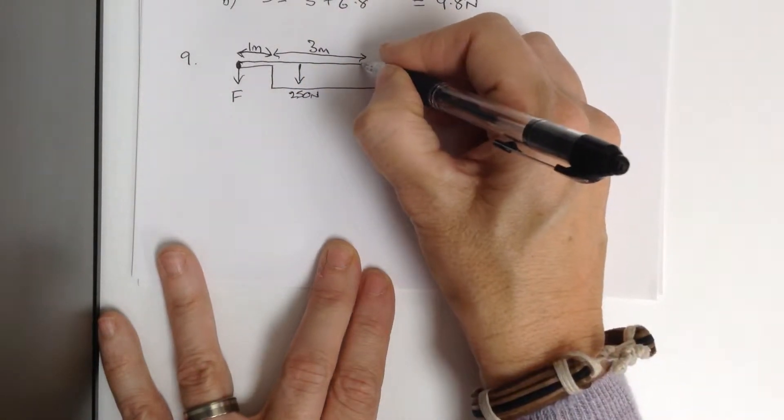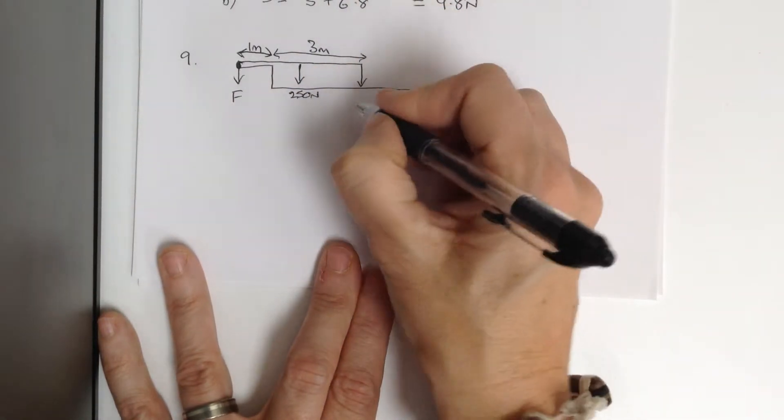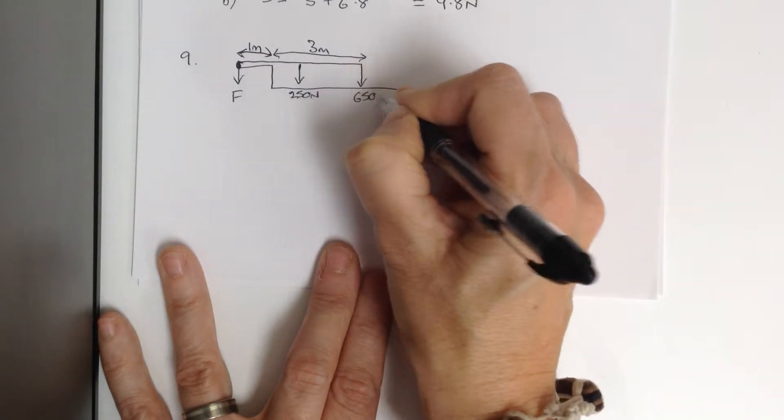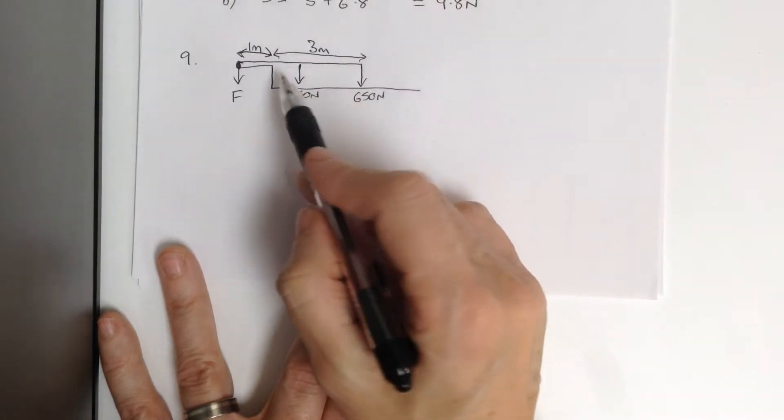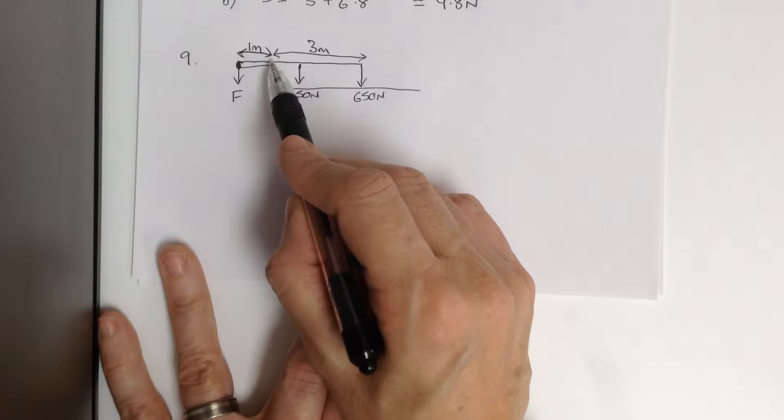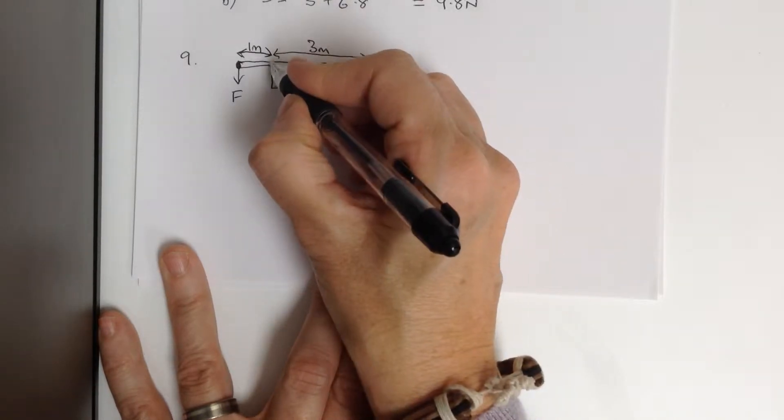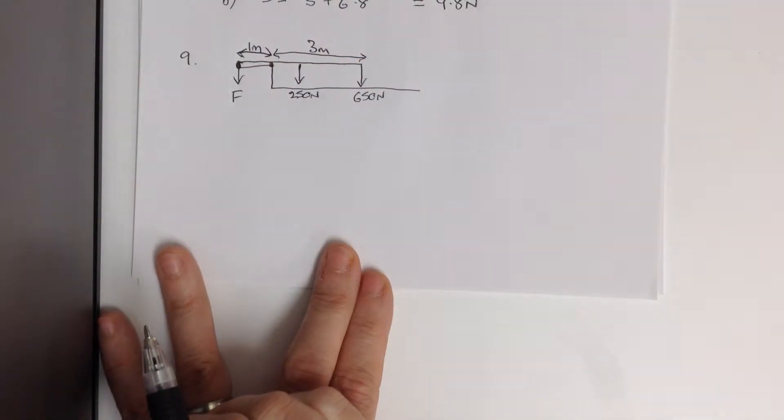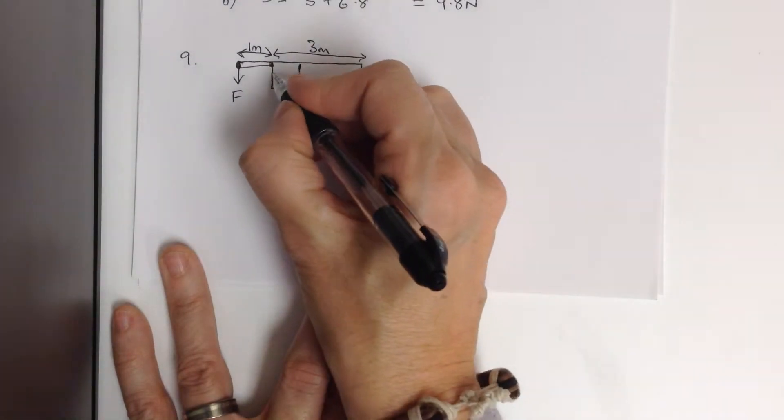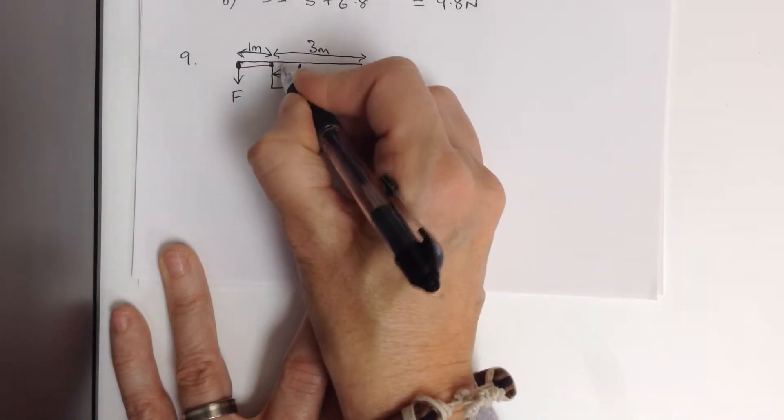If someone stands on the end before 650 newtons, the board will want to turn around this point here, acting as a pivot. This distance must be one metre.